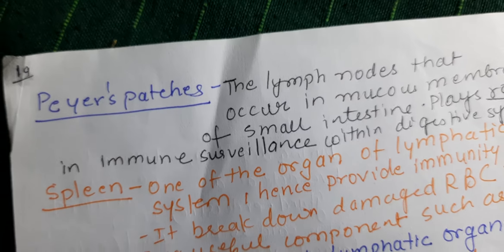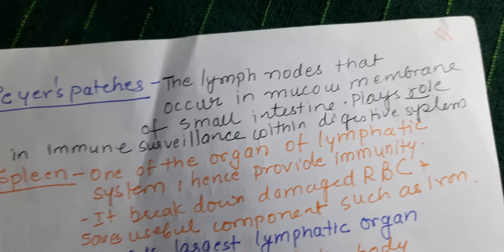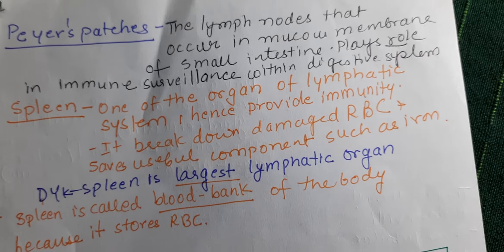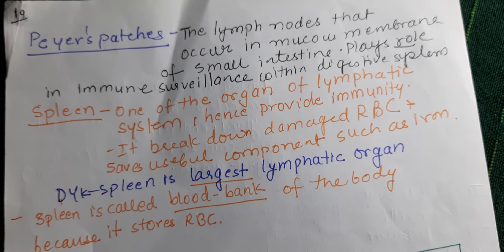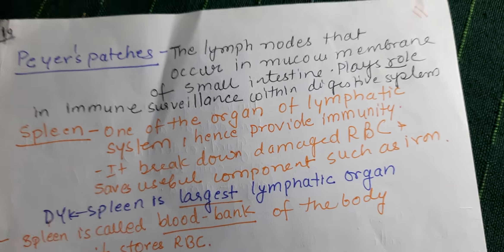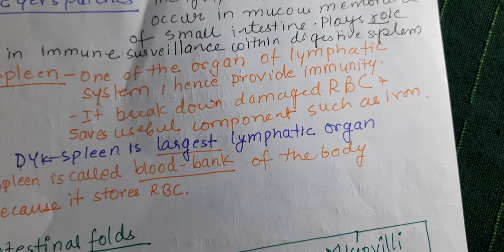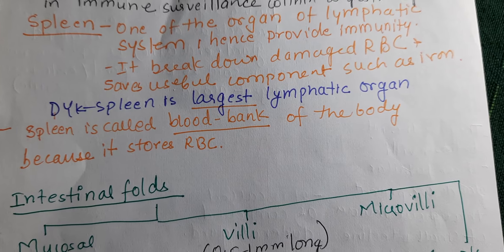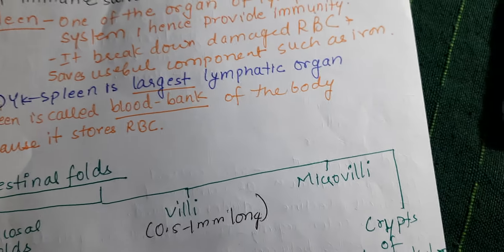There are a few terms to understand: Peyer's patches are lymph nodes that occur in the mucous membrane of small intestine and have a role in immune surveillance within the digestive system. The spleen is an organ of the lymphatic system and is not associated with the digestive system, but it is placed alongside other digestive organs. Its main function is associated with immunity — it breaks down damaged RBCs and saves useful components such as iron. Spleen is the largest lymphatic organ and is called the blood bank of the body because it stores RBCs.